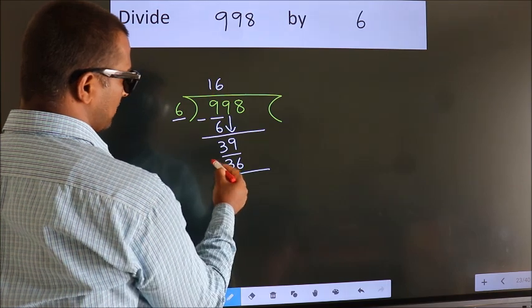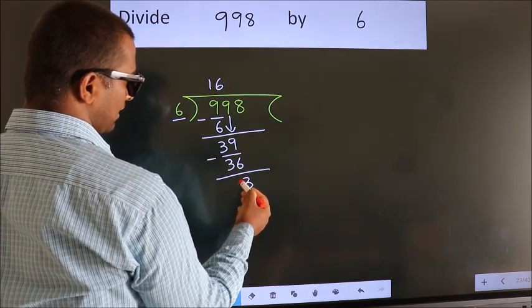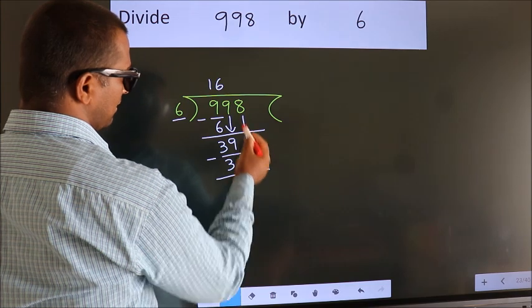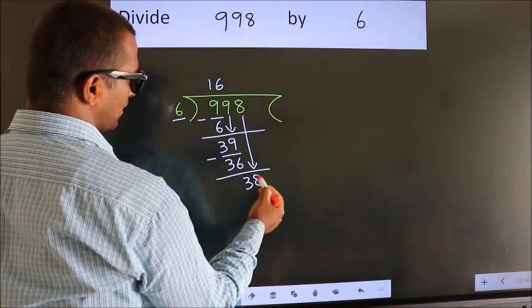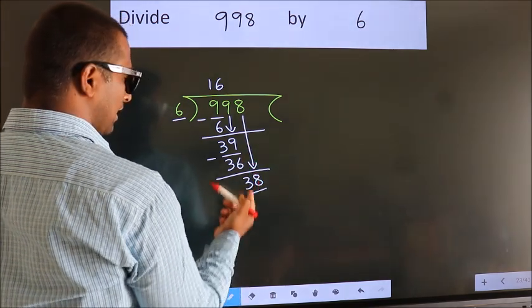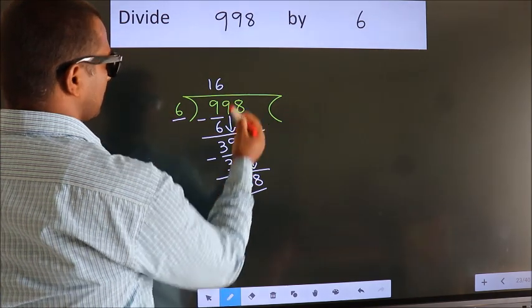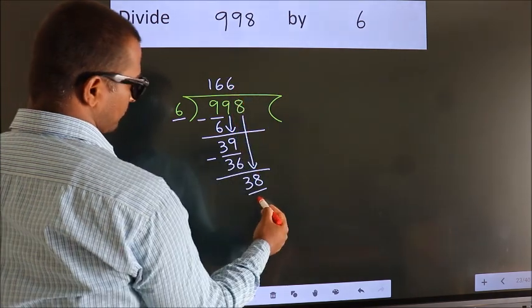Now we subtract. We get 3. After this, bring down the beside number. So 8 down. So 38. A number close to 38 in the 6 table is 36—6 times 6.